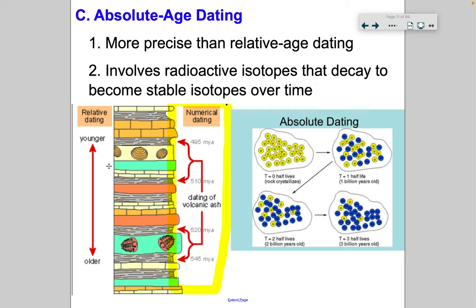This diagram does a great job summarizing the two ways to date fossils. We have relative age dating, where younger rock layers are at the top and older rock layers are at the bottom. Then we have absolute dating — here it says numerical, but it's called absolute age dating — where we look at the dating of volcanic ash to get an idea of how old these rock layers are. If you figure out how old the rock layers are, you can get an idea of how old the fossils embedded in them are.